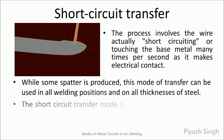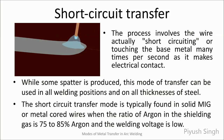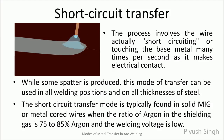The short circuit transfer can be used in all positions and is suitable for all thicknesses. The short circuit transfer method was developed in the late 1950s for thin sheet steel and out-of-position welding. This transfer mode uses a constant voltage power source, low average currents, and small diameter electrode. However, the main limitation of this mode of metal transfer is spatter.